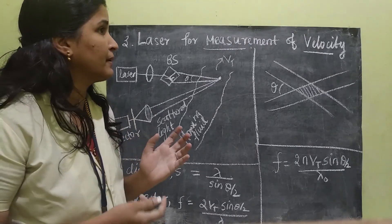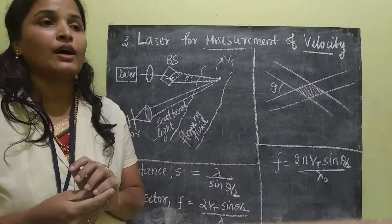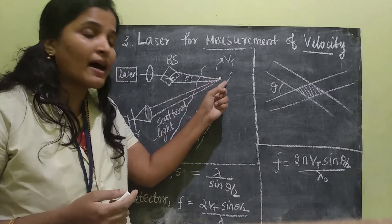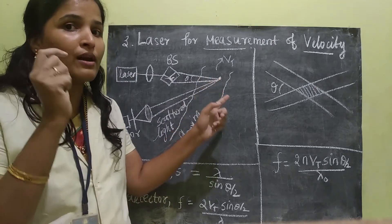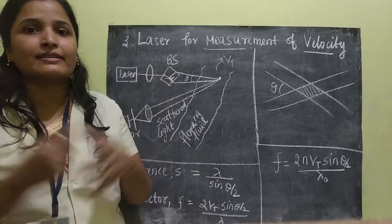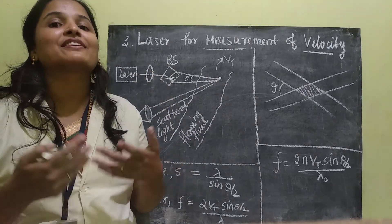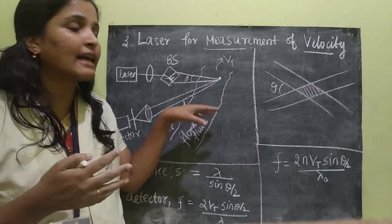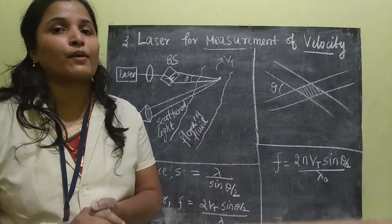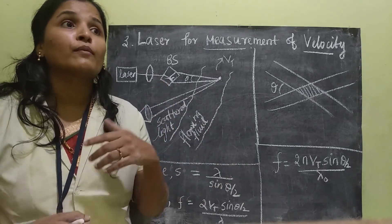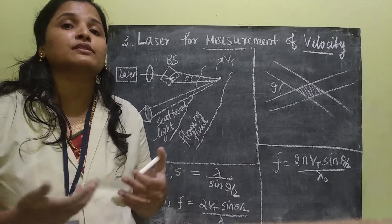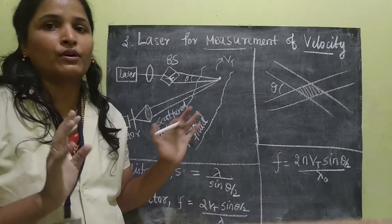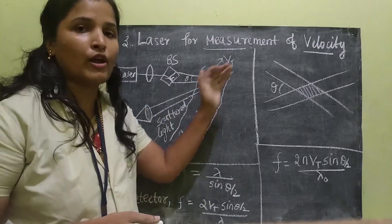Looking at the drawbacks: since the scattering depends on small particles inside the fluid, the drawback is that if it is a very clear fluid with no small particles inside, this technique cannot be applied. That is one drawback. Because of that, we sometimes need to put small scattering particles inside the flow in order to find the velocity.